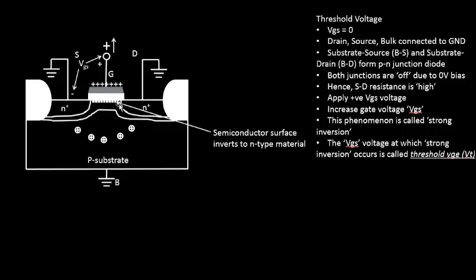We call this an n-channel, and hence this device is called an n-channel MOSFET. In a p-channel MOSFET, you have an n-type substrate with p-plus source and p-plus drain, and the channel is p-type. The behavior of the p-MOSFET and n-MOSFET are very similar — you simply replace all p's with n's and n's with p's. The p-MOSFET topic was introduced so it will be easy to relate its functioning to the n-MOSFET.